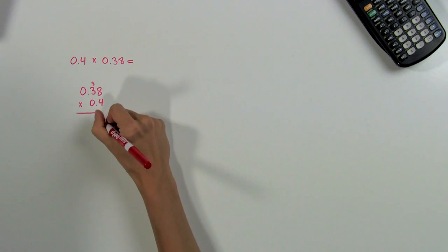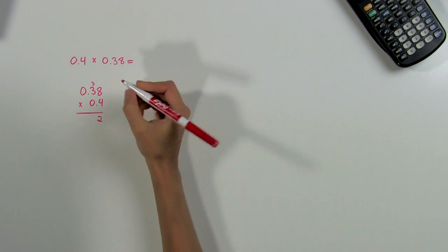Now we go ahead and multiply, ignoring the decimal points. 8 times 4 is 32. 4 times 3 plus 3 is 15.